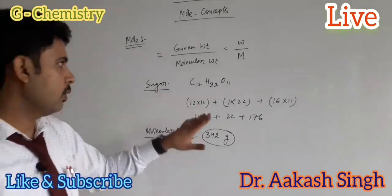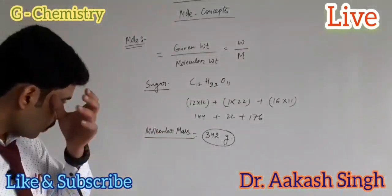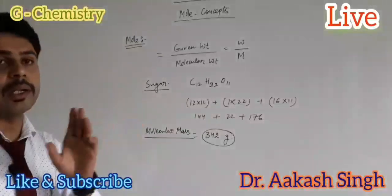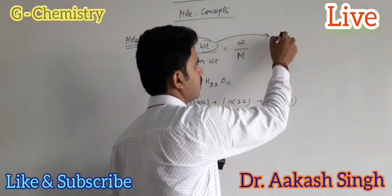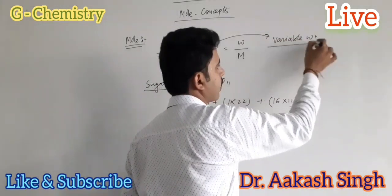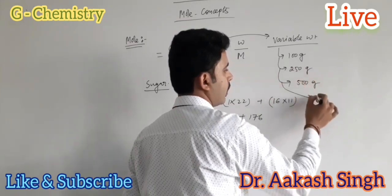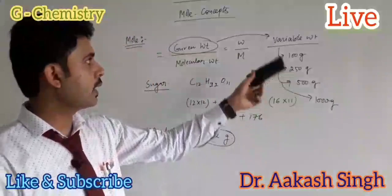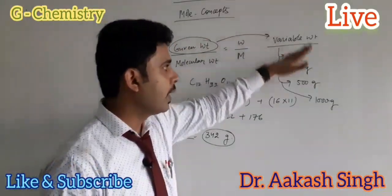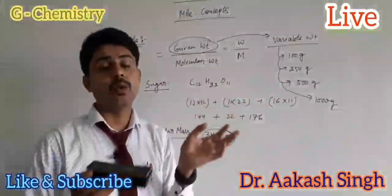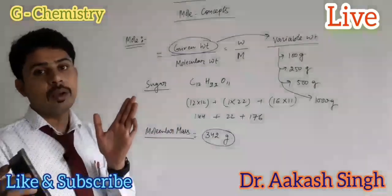Molecular mass is always fixed — whether we have one molecule of sugar or 1 kg of sugar, the molecular mass is always 342. But the given mass, or given weight W, is a variable weight — it can be 100 grams, 250 grams, 500 grams, or 1000 grams. These are values which can be different.